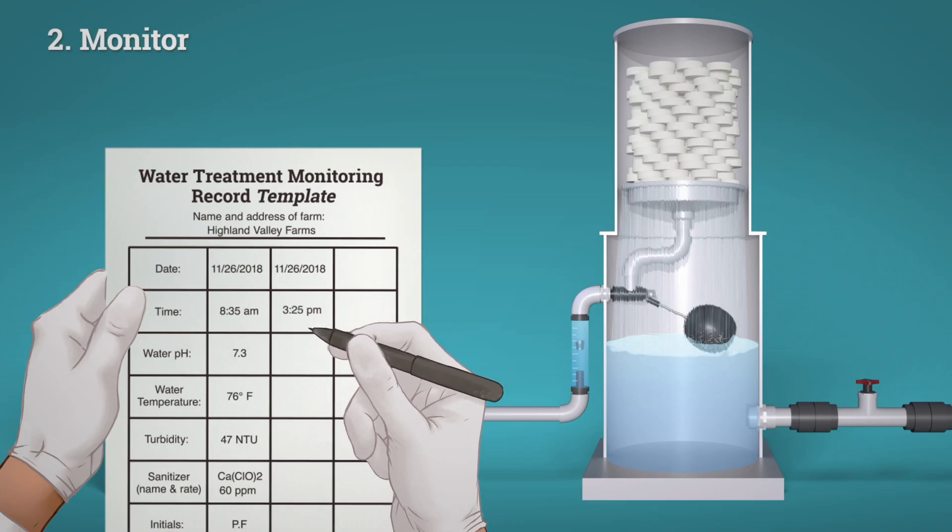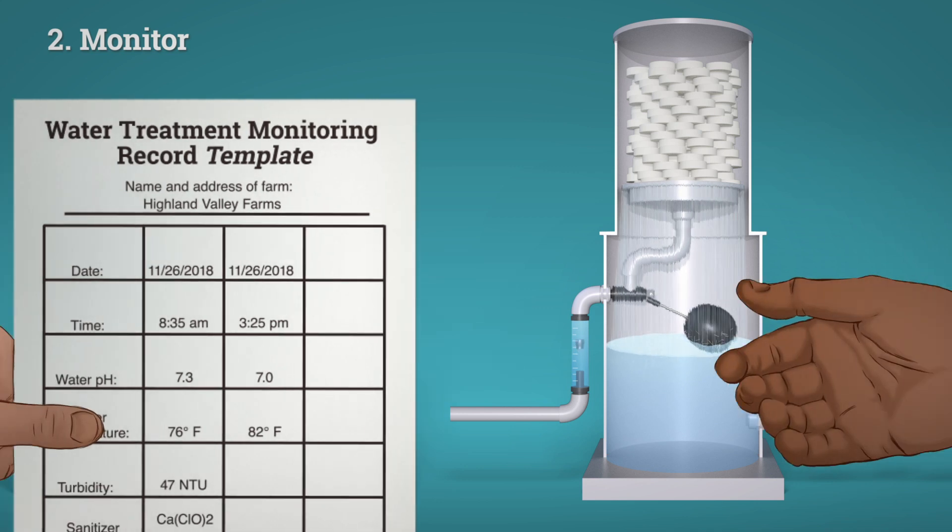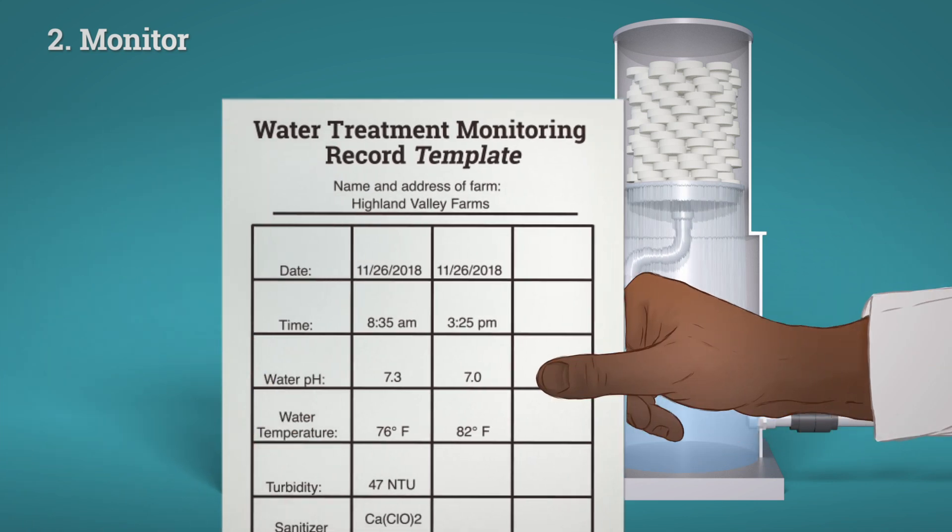When we monitor our system, it is important to make a record of our observations for other employees of the farm or outside inspectors and auditors to review.